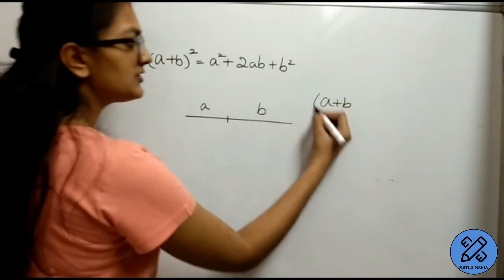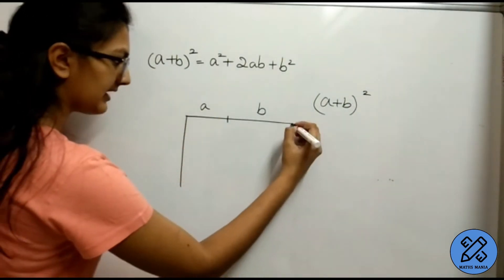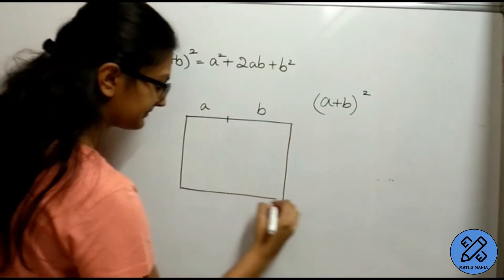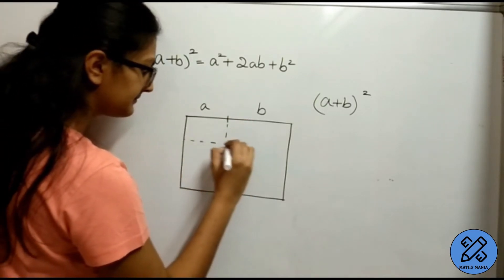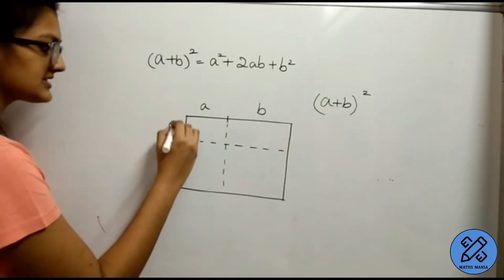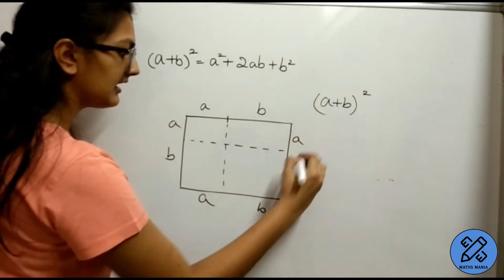But we want to find out a plus b the whole square. So, we will draw a square and just simply extend this line. This is the part a, b, a, b, a and b.